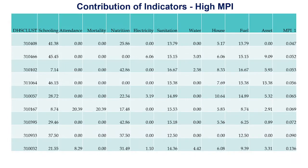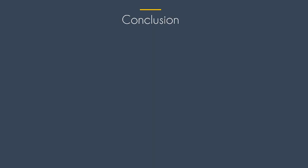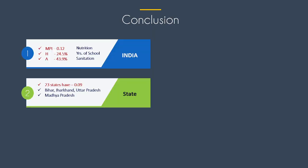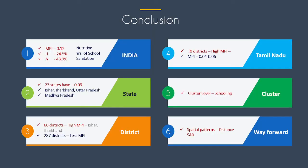To conclude, the MPI has been calculated at the national, state, and district levels. In the next video, we will discuss how to calculate the MPI for individual households. Thank you for watching — I hope you liked the video. If you have any doubts, please comment below.